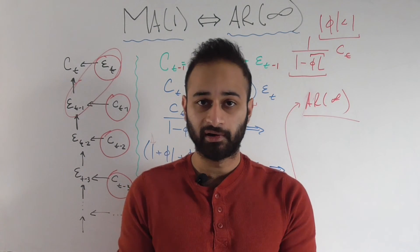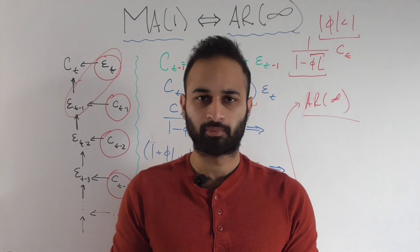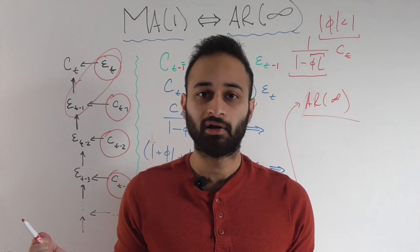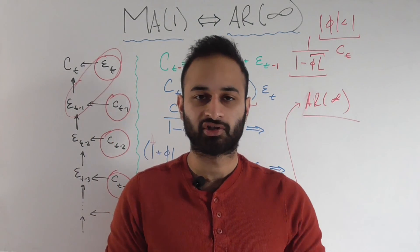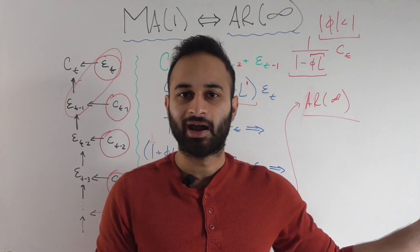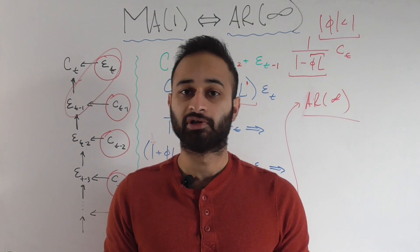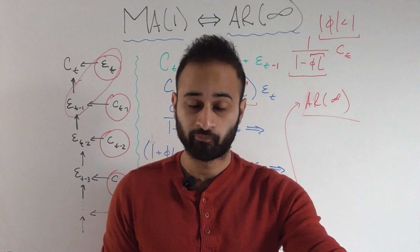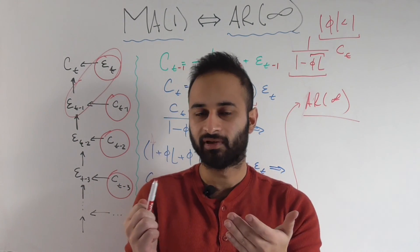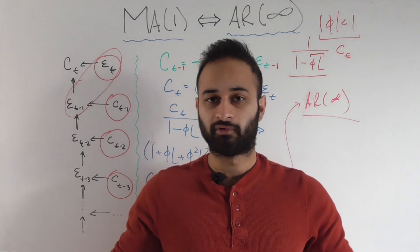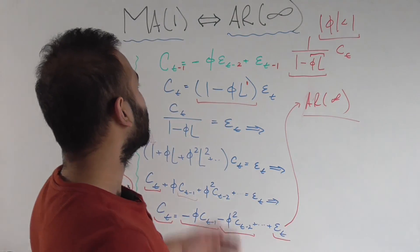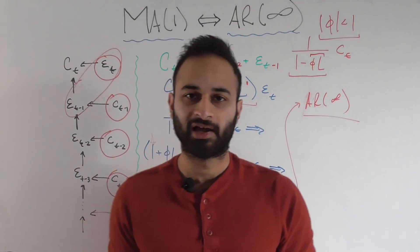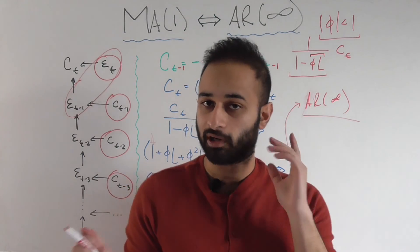So I wanted to give that definition at the end because it really doesn't help too much in understanding this idea. But once we have understood the idea, I can just put a label on it and say that everything we talked about means the time series is invertible. Okay, so hopefully that helped to start understanding the idea of invertibility. In the next video, we'll just turn the tables and we'll talk about how a AR1 model is the same thing as a MA infinity model. All right, so until next time.